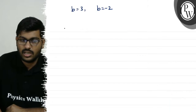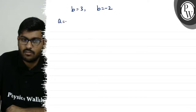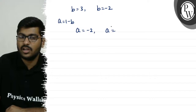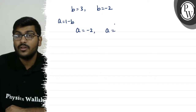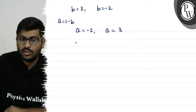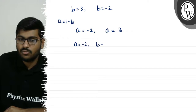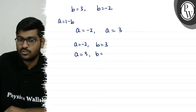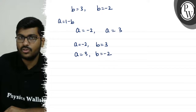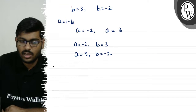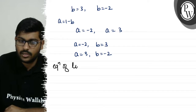When b equals 3, a equals 1 minus 3, which is minus 2. When b equals minus 2, a equals 1 minus (minus 2), which is 3. So the two pairs are (a, b) = (minus 2, 3) and (a, b) = (3, minus 2).